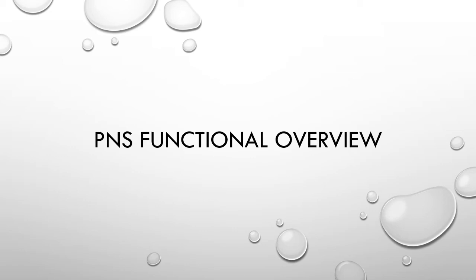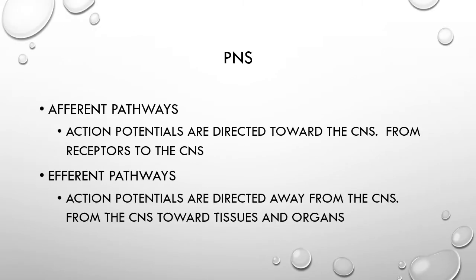Welcome back. We'll now take a look at the peripheral nervous system's functional overview. We just got done looking at the central nervous system, and here we'll take a look at the peripheral nervous system. The peripheral nervous system, as we talked about for the central nervous system, has two major components: it has our afferents and it has our efferents.